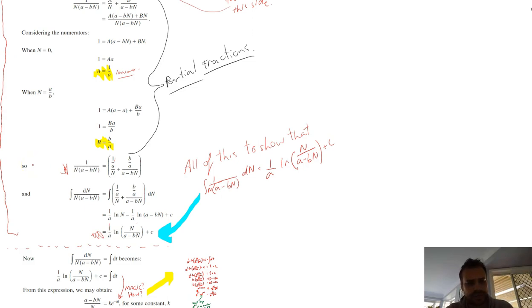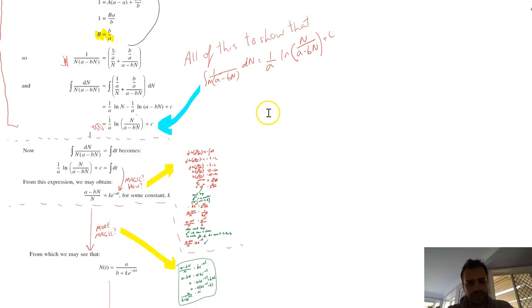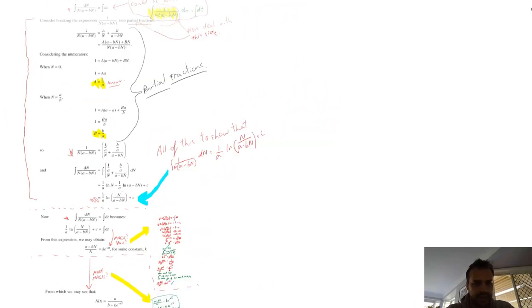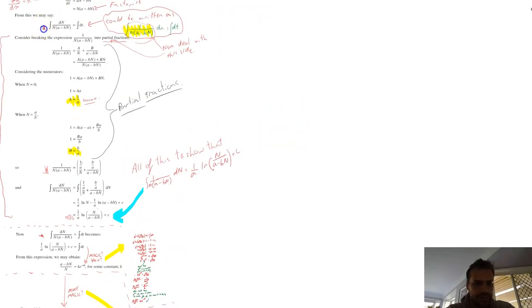All right. So that's, it shouldn't be too tough so far, but you may want to sit and go through those steps for the partial fractions. Now, what that means is that this is where we sort of almost started from. This is, this was all the way back there. So the reason we did all that partial fraction stuff was so we could rewrite the integral of dn over n a minus bn as